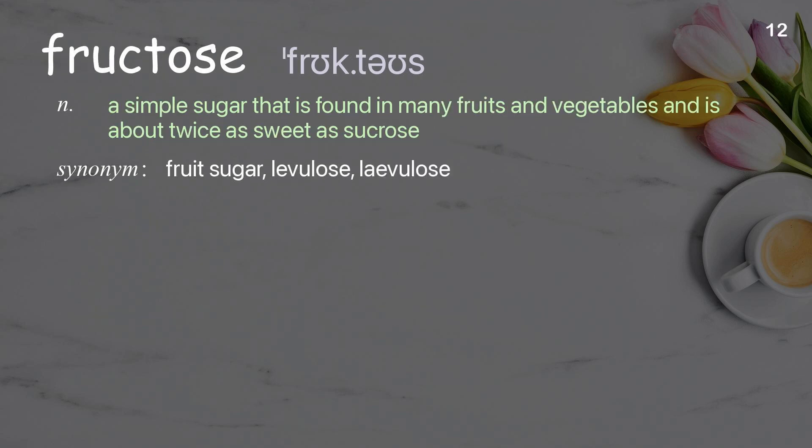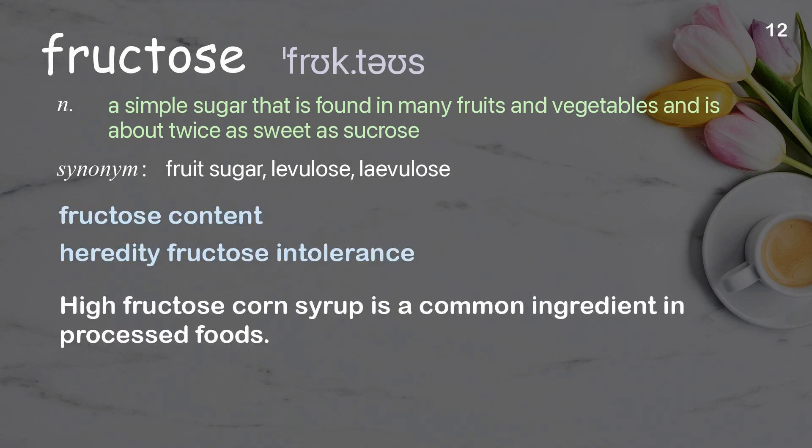Fructose. A simple sugar that is found in many fruits and vegetables and is about twice as sweet as sucrose. Examples: fructose content, hereditary fructose intolerance. High fructose corn syrup is a common ingredient in processed foods.